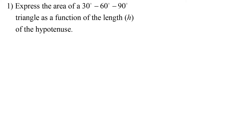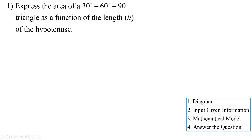Number one: express the area of a 30-60-90 degree triangle as a function of the length H of the hypotenuse. They're essentially asking you to come up with a formula for the area of a special right triangle in terms of its hypotenuse. When doing these problems, here's my rule: draw a picture, input the given information, come up with a mathematical model, and then use that model to answer any question.